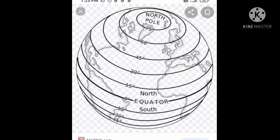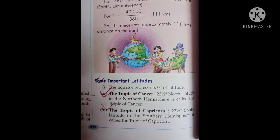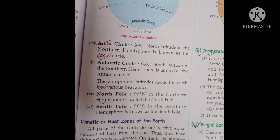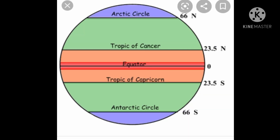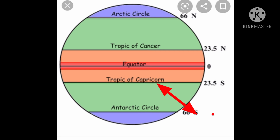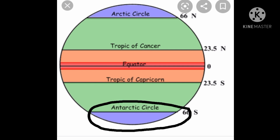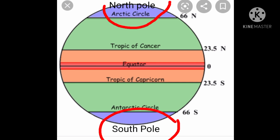The distance between any two parallels of latitudes is always equal. Key latitudes include: the Arctic Circle at 66.5 degrees north, the Antarctic Circle at 66.5 degrees south, the Tropic of Capricorn at 23.5 degrees south, the equator at 0 degrees (the largest latitude), the North Pole at 90 degrees north, and the South Pole at 90 degrees south.